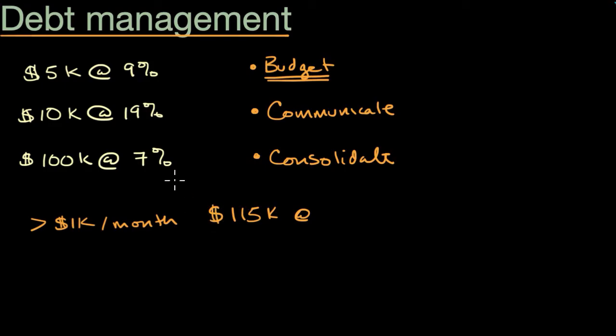You're refinancing your mortgage. Take out $115,000, maybe at 7%, and use that to pay off all of this. That has two potential benefits. One, you're getting that low interest rate across all your loans now. Two, you now only have one loan to service.